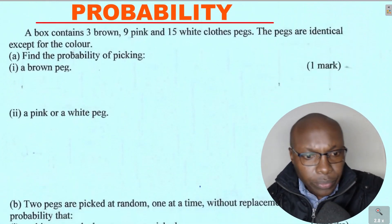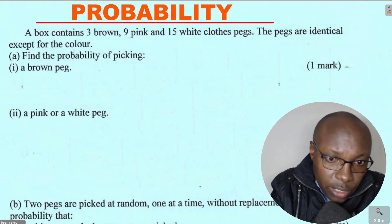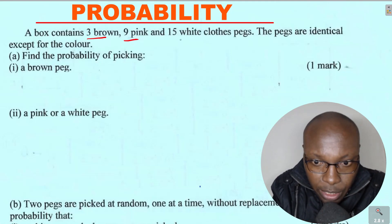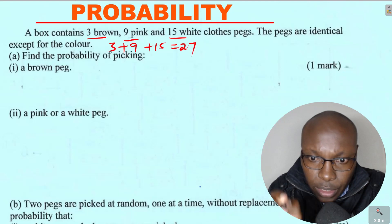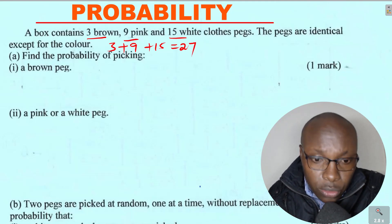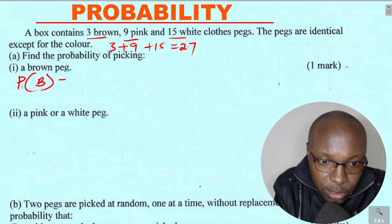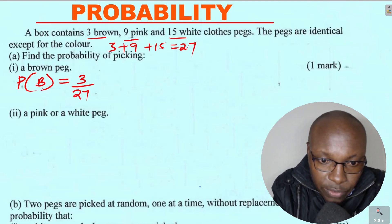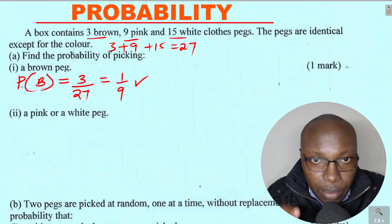In the first part, you're required to find the probability of picking a brown peg. There are 3 brown, 9 pink, and 15 white pegs. In total, just add 3 plus 9 plus 15 — they are 27 pegs in total. So out of 27, how many are brown? The probability of picking a brown peg is 3 divided by 27, which simplifies to 1 over 9.